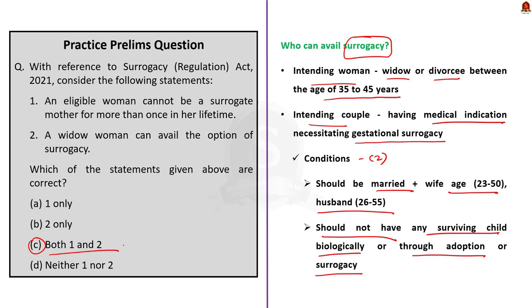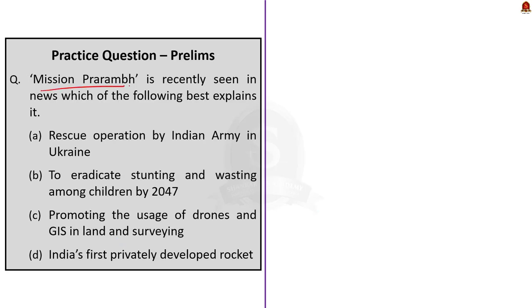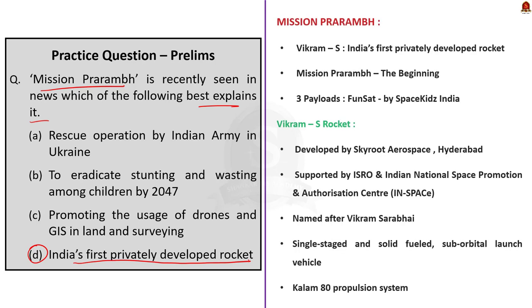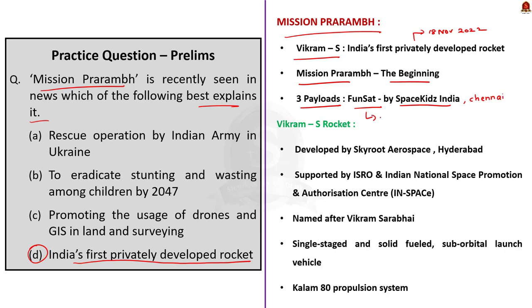The next question asks for the best explanation of Mission Prarambh. Mission Prarambh refers to India's first privately developed rocket. The answer is option D. India's first privately developed rocket, Vikram S, lifted off from ISRO's launch pad in Sriharikota on 18 November 2022. This mission was named Prarambh, meaning 'the beginning.' Under Mission Prarambh, Vikram S carried three payloads including one satellite named FUNSAT, developed by SpaceKids India, a Chennai-based aero startup. The parts of FUNSAT were developed by school students.